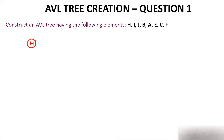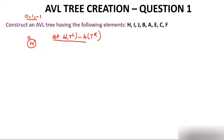When you insert a node, calculate the balance factor. Balance factor is height of left subtree minus height of right subtree. After inserting H, the balance factor is 0, so it is an AVL tree. Then insert I — I is greater than H, so it comes to the right. Now balance factor of H is 0 minus 1 = minus 1, and I is 0. The tree is still an AVL tree.